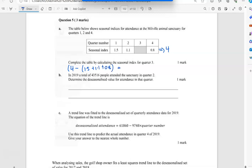So when I do that, I end up with 0.6, so I got that one and I popped that in there. So that's a quick way, but you can only do that if only one is missing. We saw earlier what we have to do when there's more than one missing. So in 2019, a total of this many people attended in quarter two. Determine the de-seasonalized value.